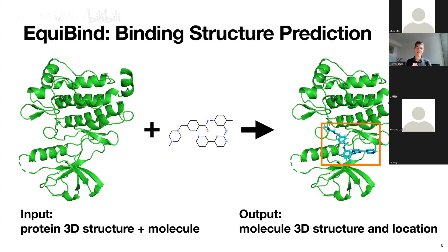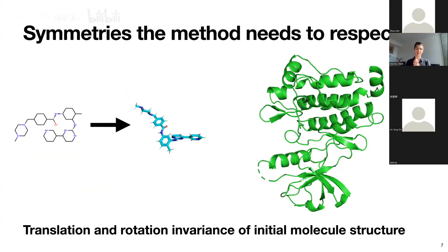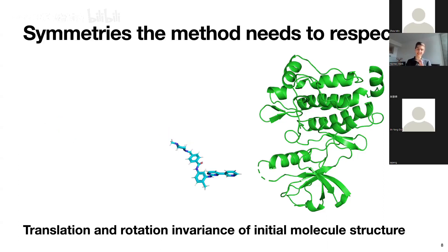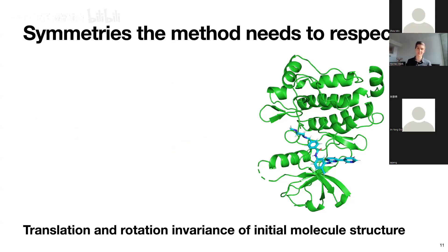When tackling this task, we have some symmetries that we want our model to respect. For example, we generate an initial guess of what the 3D structure of the small molecule could be. But no matter where we place this initial guess in space—whether it's here, here, or here—we always want to end up making the same prediction. So we want to be invariant with respect to the translation and rotation of the initial molecule structure.